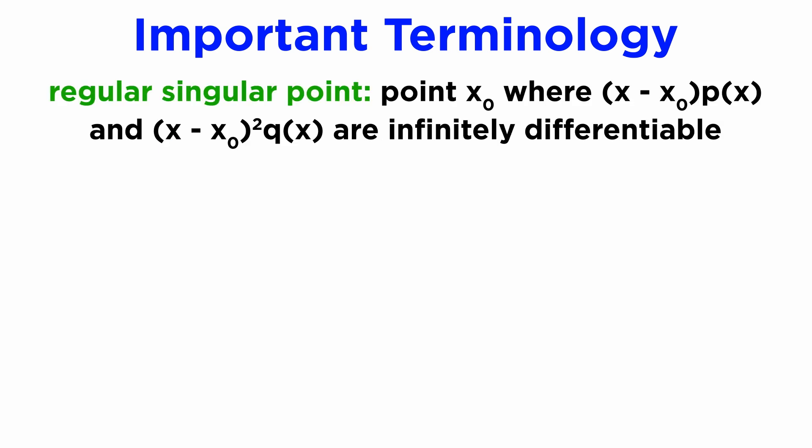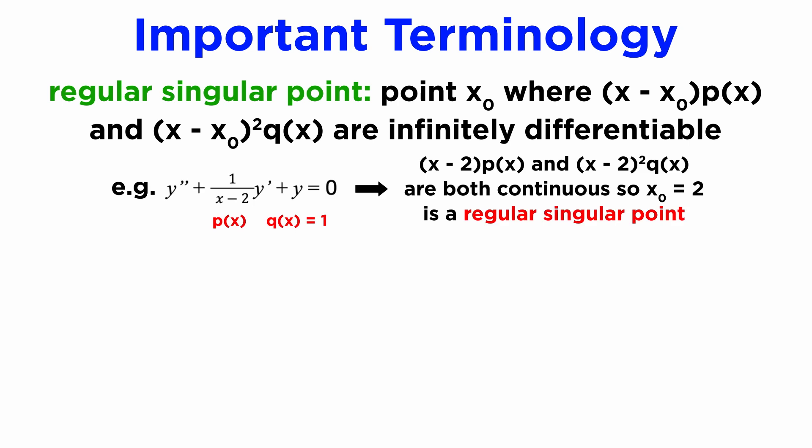A singular point is further classified as a regular singular point if, when we multiply p(x) by (x − x₀), and when we multiply q(x) by (x − x₀)², the singularities of these functions disappear, and we can see that this is the case for our example singularity at x = 2.